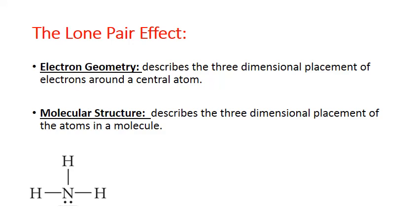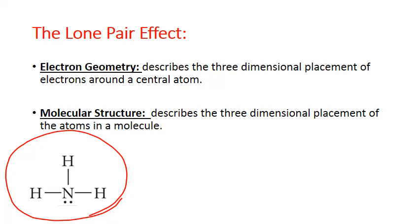Let's look at that difference with ammonia. This is the Lewis structure for ammonia, NH₃. Notice that it actually has four electron groups on that nitrogen atom — three of them are single bonds, and the fourth is a lone pair. In terms of electron geometry, all of those groups are pushing, so we count that as a total of four electron groups, and the electron geometry is considered tetrahedral, with those groups about 109.5 degrees away from each other.